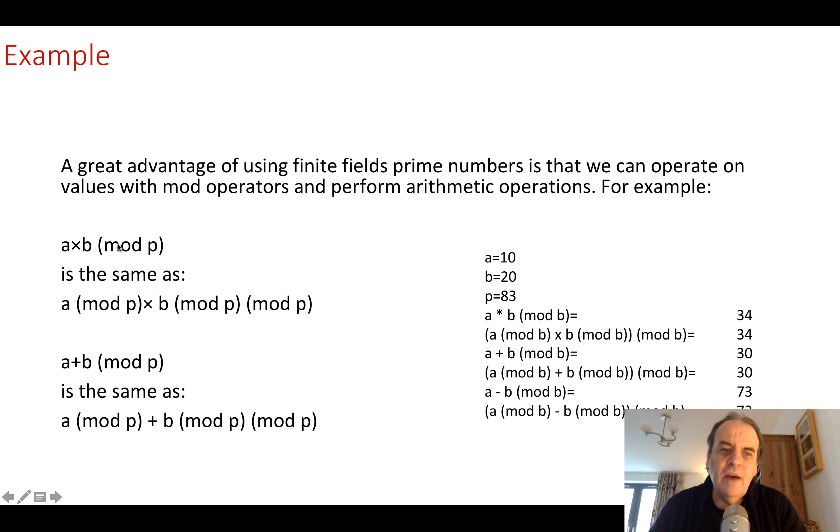And the great thing about this type of operation is that we can use our normal arithmetic operators and perform our functions by taking mod p each time. So a times b and then mod p is the same as a mod p times b mod p. And then we can multiply them together and then take the mod p. So here's an example here, so I've just calculated this, a times b mod p gives us 34.